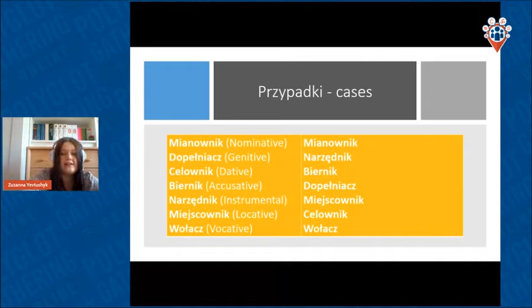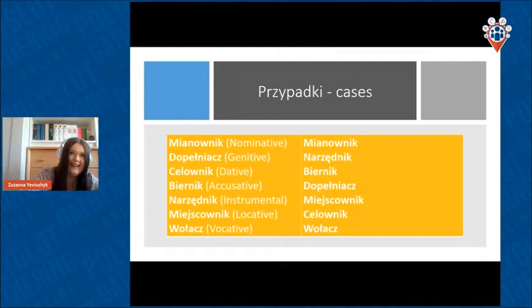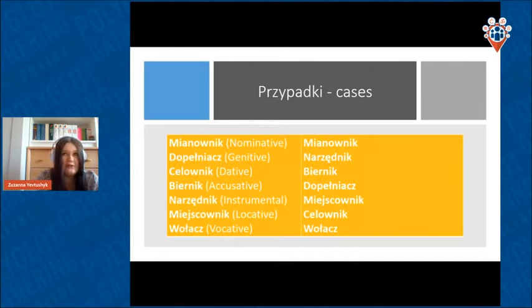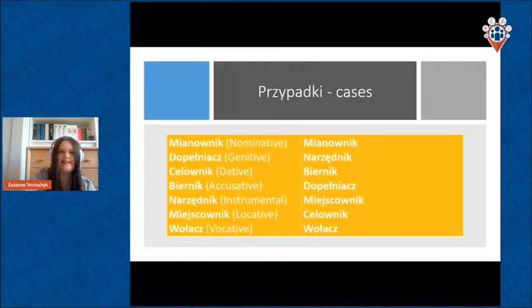In Polish, we have seven cases and we use all of them. Some people say we don't use the vocative case, but it's not true — we use it in official situations, when we talk with our parents, at university, at work, and so on. On a daily basis with friends we don't use it, but it's nice to recognize it. So yeah, we have seven cases and we use all of them.